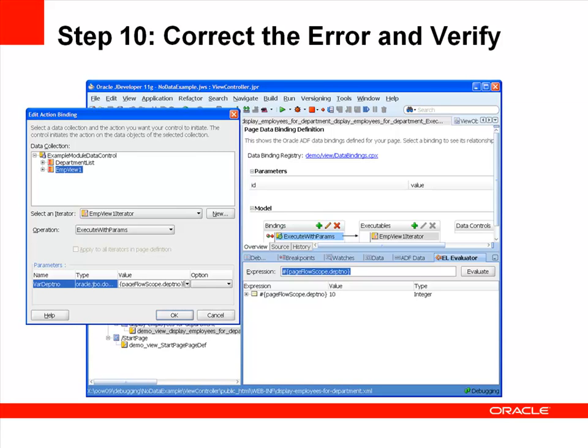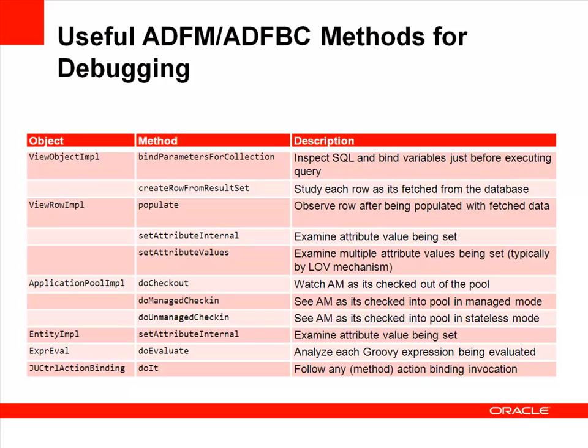In this example, we set breakpoints at bindParametersForCollection to debug an application. This list includes additional ADF methods that are helpful for determining where to set breakpoints at various points in the ADF framework. For example, if data isn't getting created or updated correctly, you might set a breakpoint at the setAttributeInternal method of the entity object class in order to determine the value that's being set for a particular attribute.